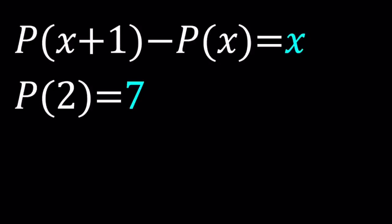So what kind of polynomial are we looking at if their difference is X? So think about it this way. If P of X is constant, then P of X plus 1 is also going to be constant. And the difference of the same numbers will be 0. There's no way you can get an X.